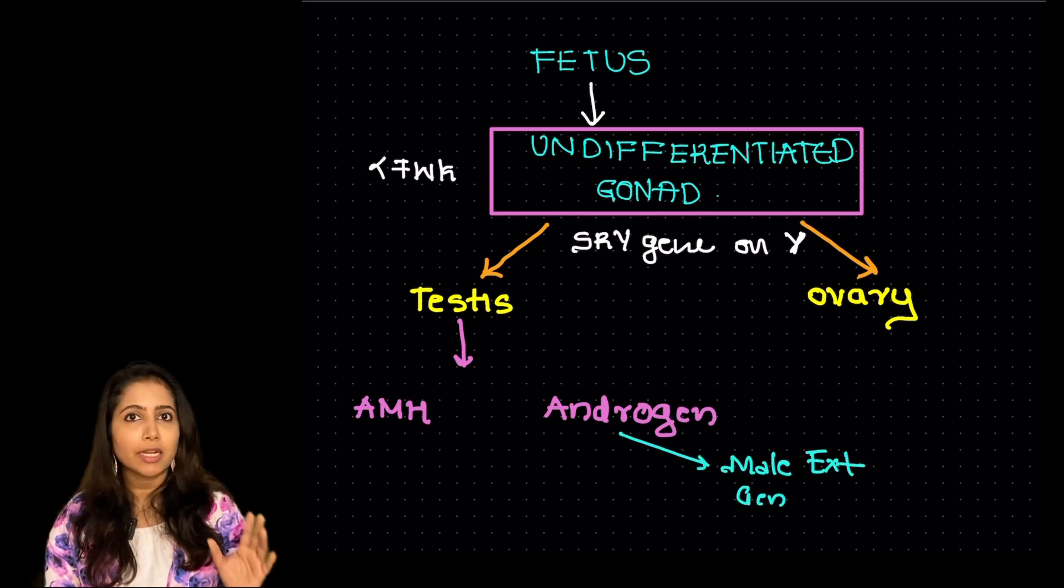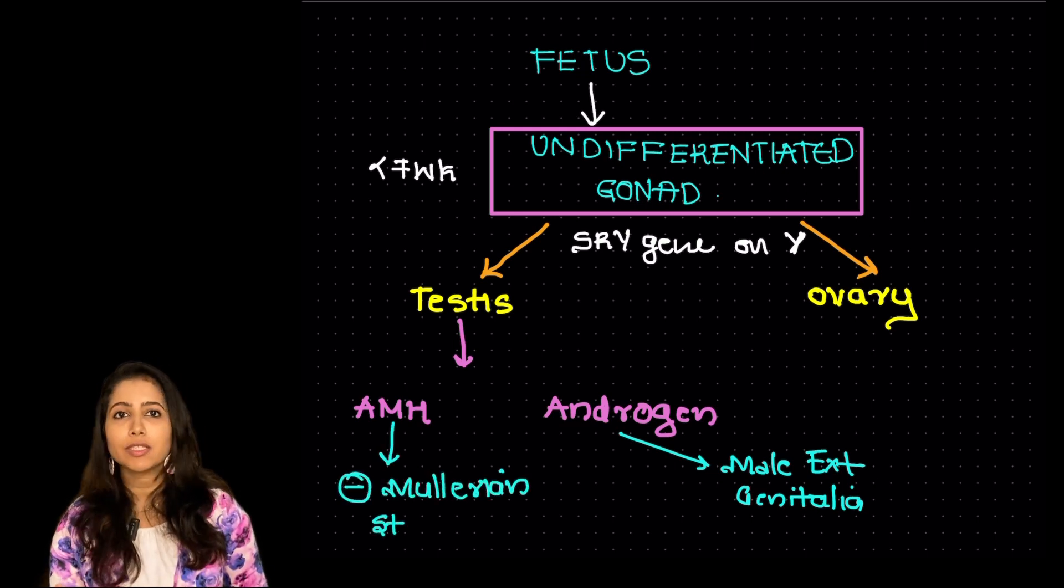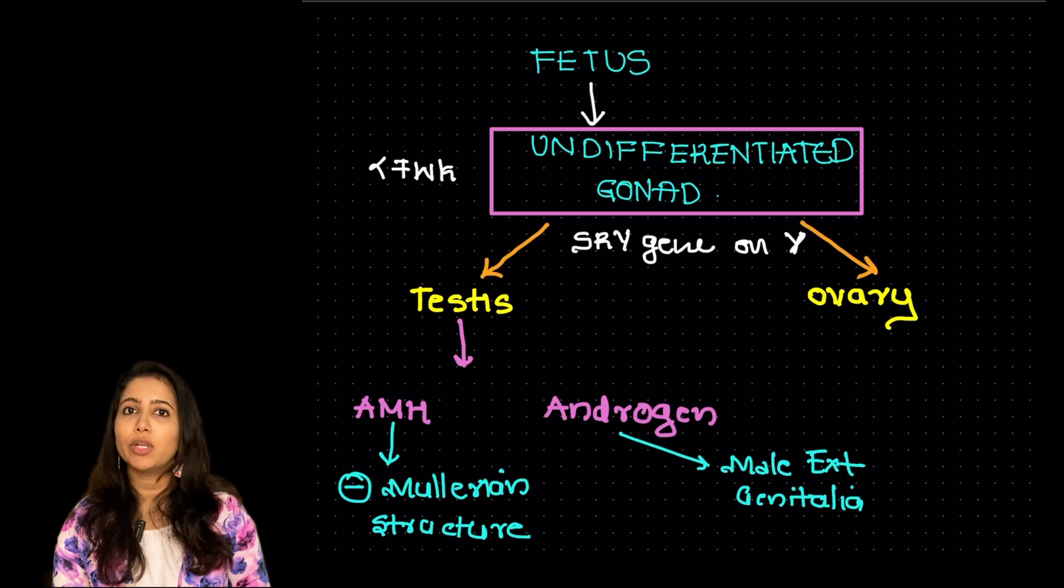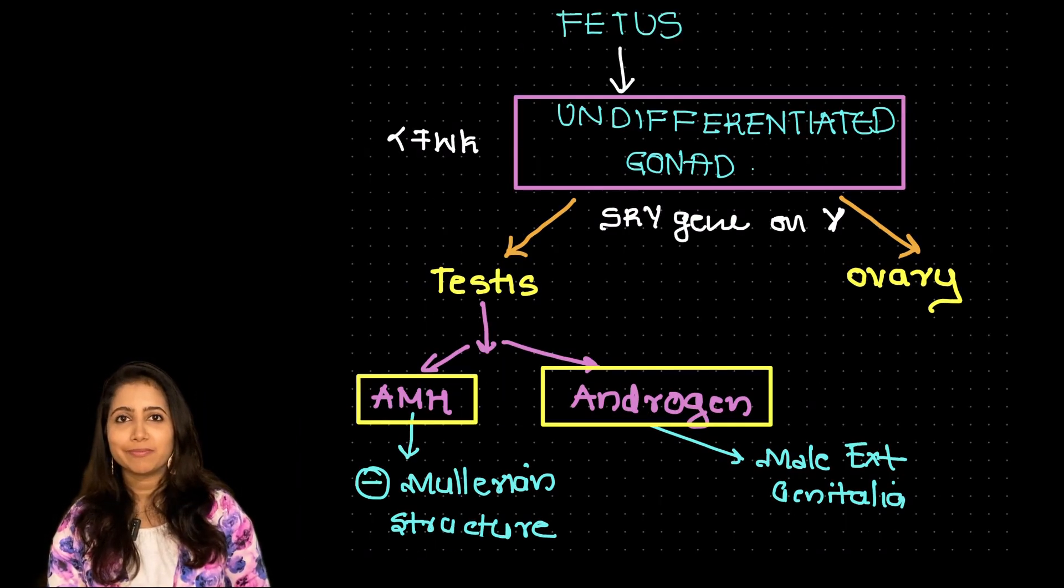The androgens are responsible for the male external genitalia and the AMH is responsible for inhibiting the mullerian structures so that the wolffian duct develops. Alright now let us learn about amenorrhea.